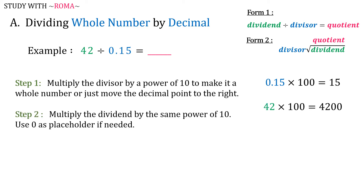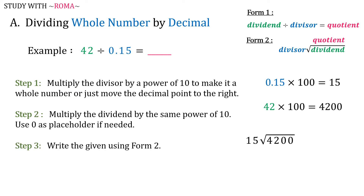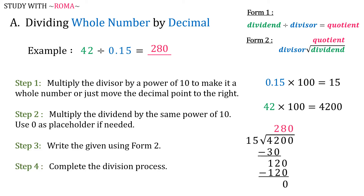Step 2: Multiply the dividend by the same power of 10, and use 0 as a placeholder if needed. So, we will multiply 42 as well by 100. 42 times 100 is equal to 4,200. Step 3: Write the given using form 2. Step 4: Complete the division process. So, 4,200 divided by 15 is equal to 280.